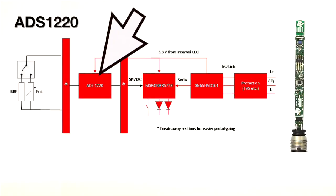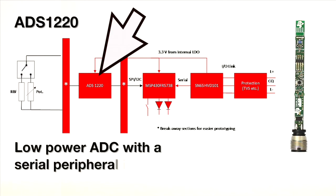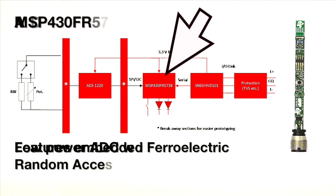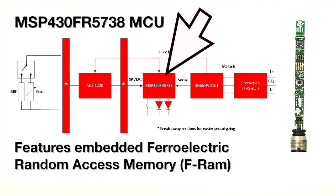The ADS1220 offers a low power ADC with a serial peripheral interface, or SPI, for readback from the microcontroller. The MSP430 FR5738 MCU features embedded ferroelectric random access memory, or FRAM, non-volatile memory, which brings unique capabilities for field updates and logging.